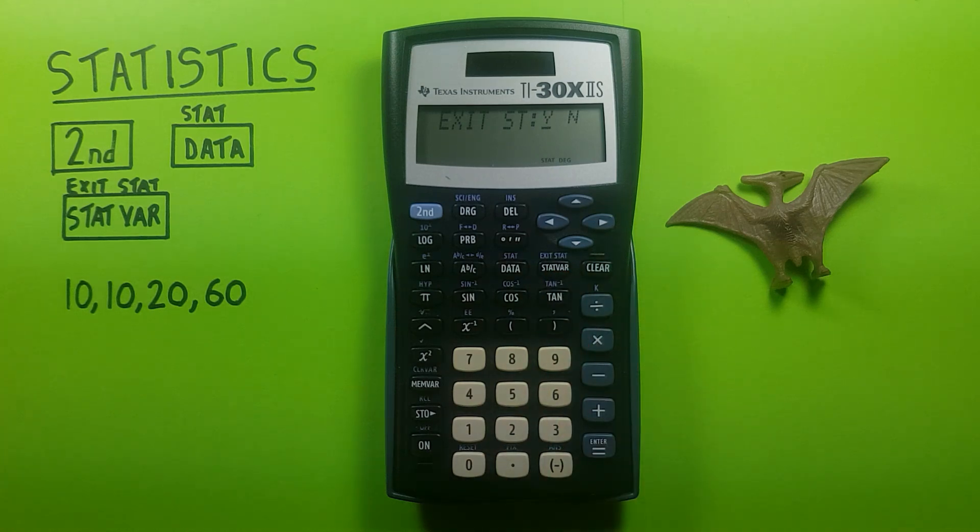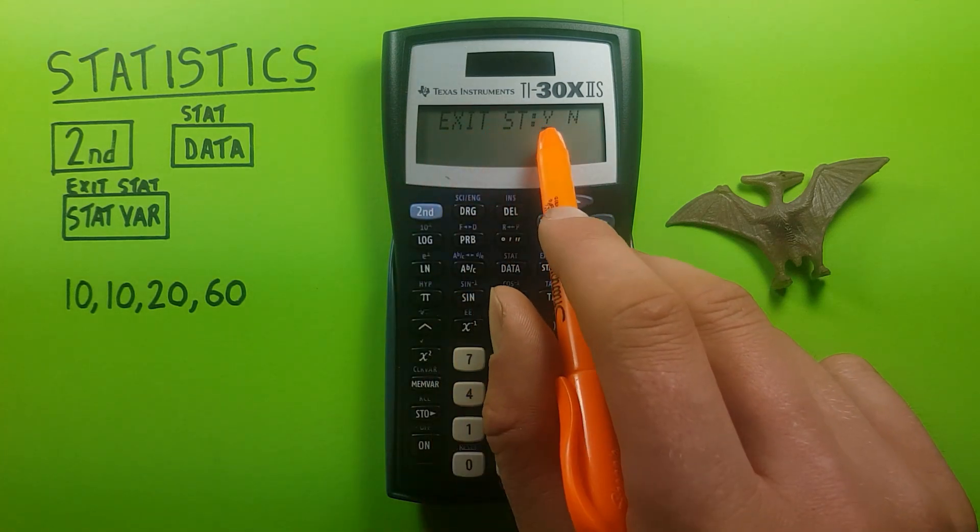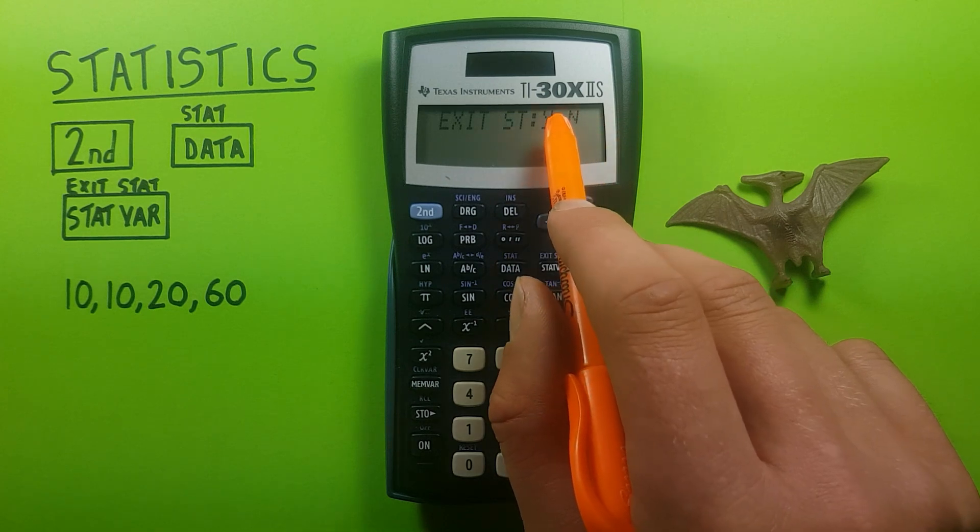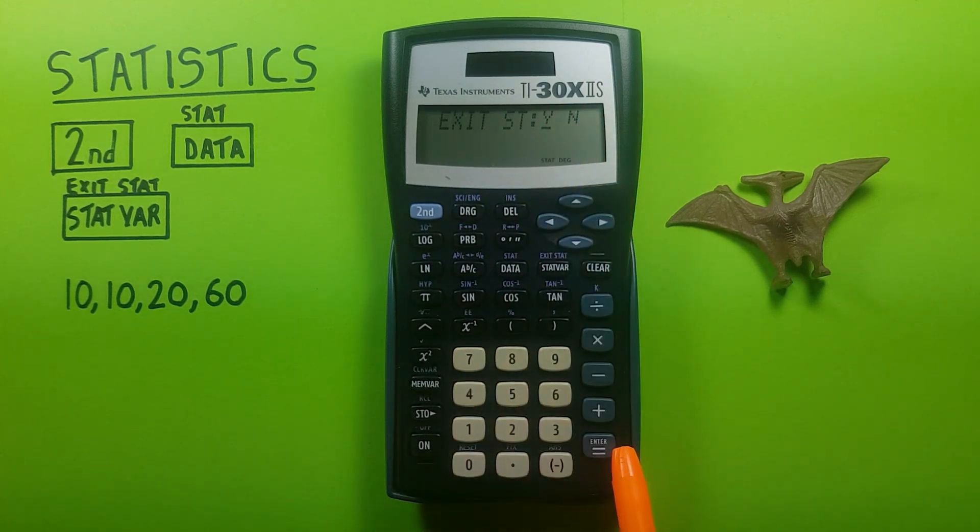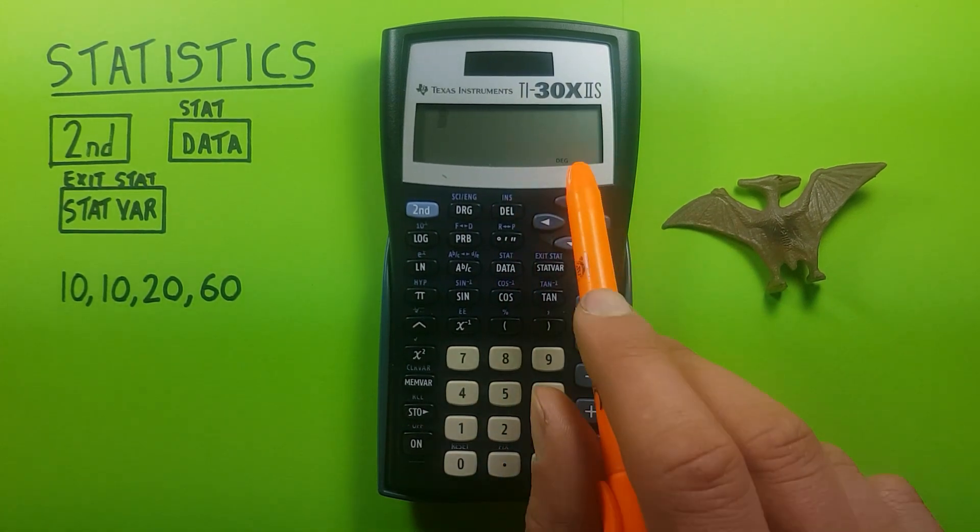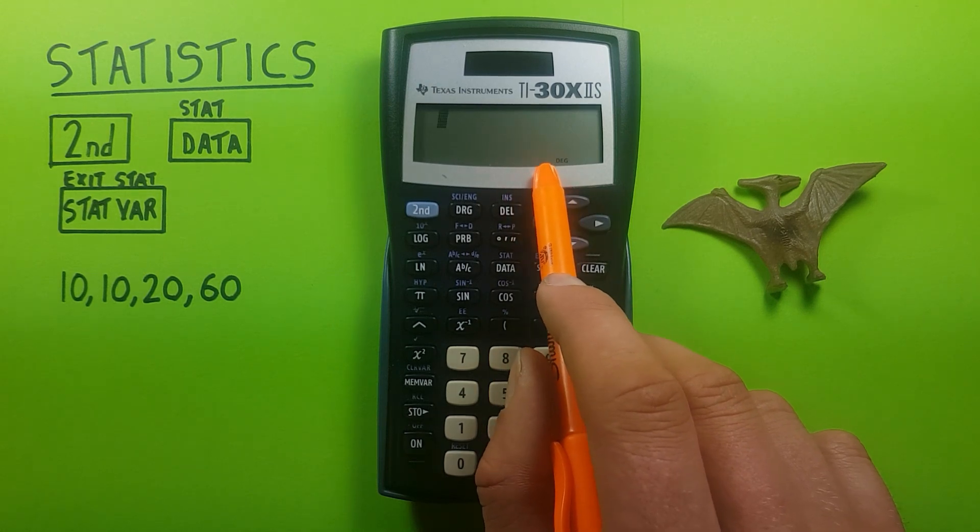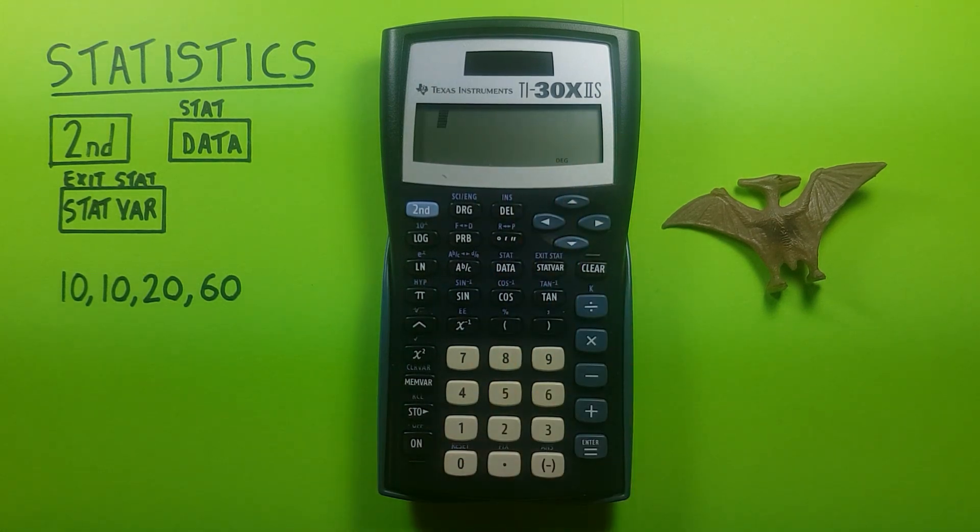That'll bring up this screen. Exit ST, yes or no. Since we do want to exit it, we press the Y, enter, and you can see the STAT at the bottom of the screen is gone. This tells us we're back into our regular calculator mode.